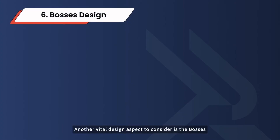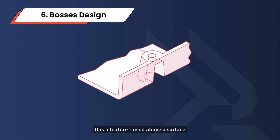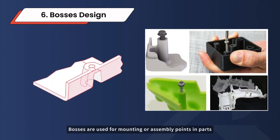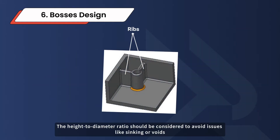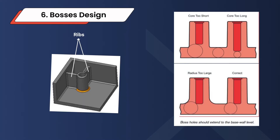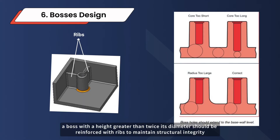Another vital design aspect to consider is the bosses. A boss is a feature raised above a surface, used for mounting or assembly points in parts. Ensure bosses have adequate support, usually by connecting them with ribs. The height-to-diameter ratio should be considered to avoid issues like sinking or voids. For instance, a boss with a height greater than twice its diameter should be reinforced with ribs to maintain structural integrity.